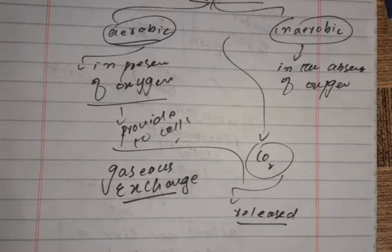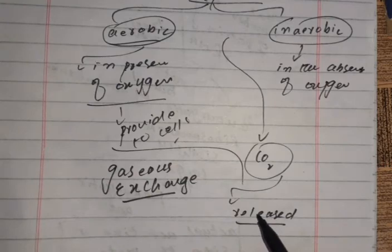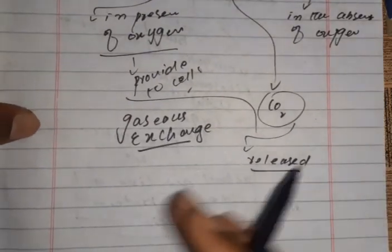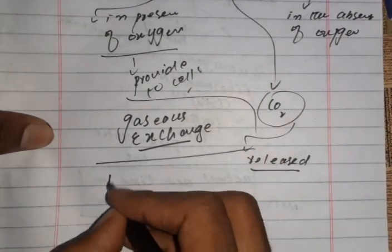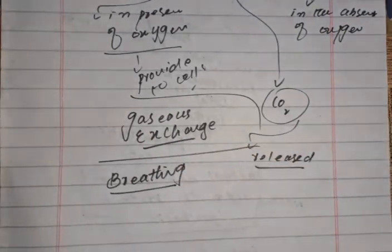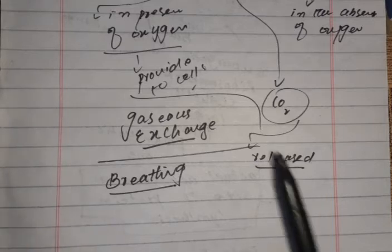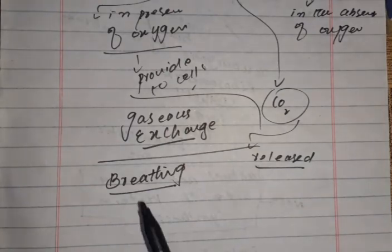The term breathing is used for the process through which animals take air into the body to get oxygen from it, and then give out the air to get rid of carbon dioxide. This was gaseous exchange — oxygen in, carbon dioxide released. But breathing is quite different from gaseous exchange.